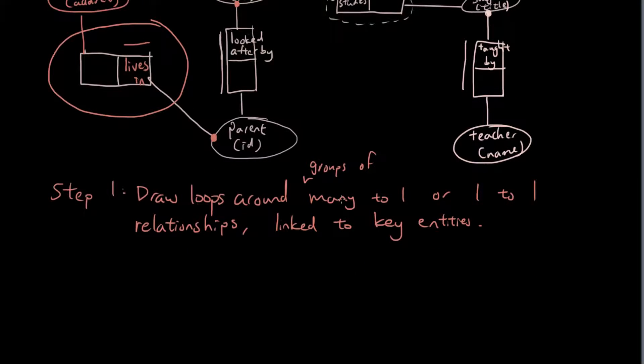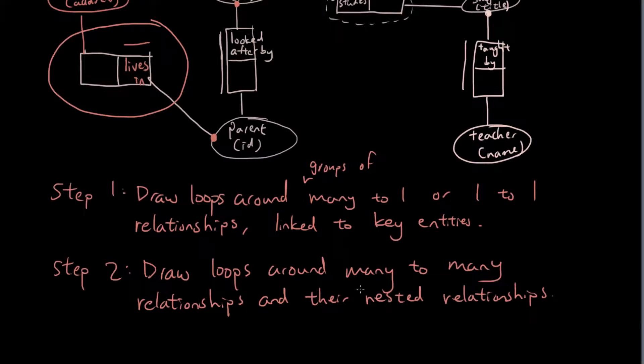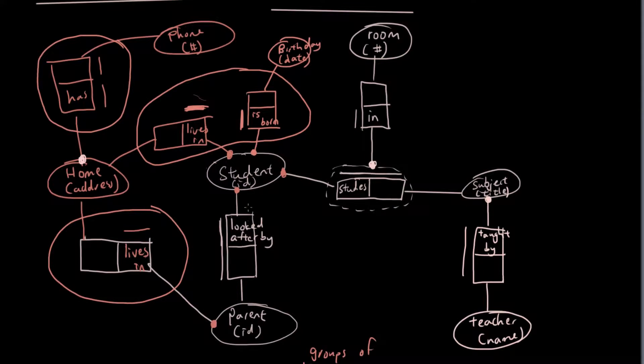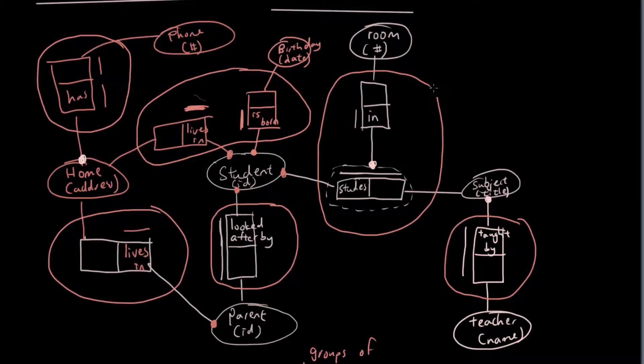Step two: Draw loops around many-to-many relationships and their nested relationships. So if you have a look, we got a many-to-many relationship here, so we can circle that, because that's part of step two. We have many-to-many relationship here, so we can circle that. Now we have a many-to-many relationship and the relationship that's nested off that, so we circle both of these within one table. And once every single relationship is circled, we finish step two.